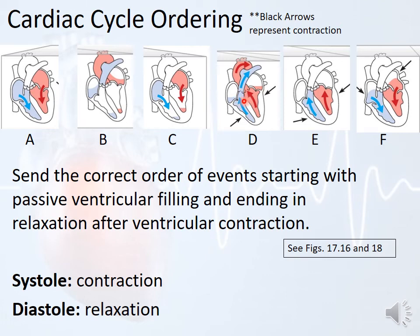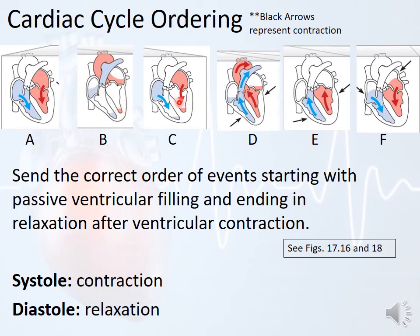Sixth and last step is B — there's still some pressure in the left ventricle, more than in the atria, so the atria are filling but the AV valves haven't opened yet. So the order is C → A → F → E → D → B, then start back over at C. Spend some time on that to really understand it — it's a very important aspect of understanding the heart.